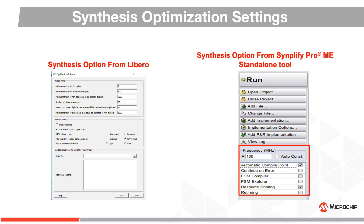Simplify Pro also allows entry of common optimization settings using their main GUI. These include a default frequency used by the synthesis tool for unconstrained clocks, and an auto-constraint radio button which will synthesize to maximum possible frequencies. Automatic compile points will minimize synthesis runtime.